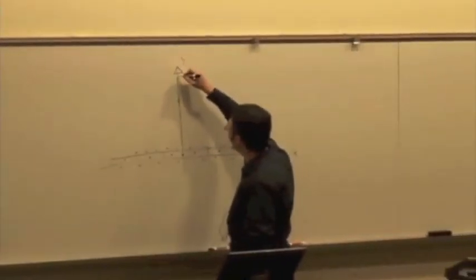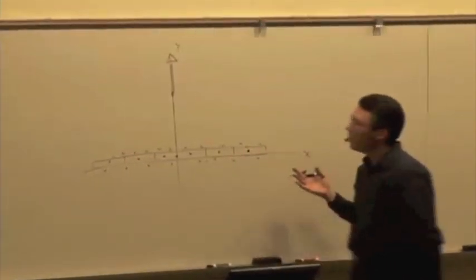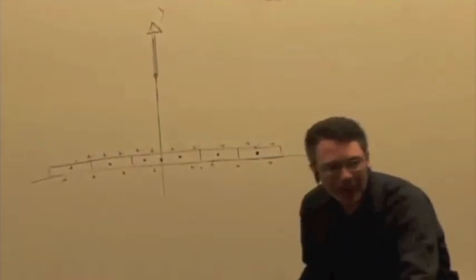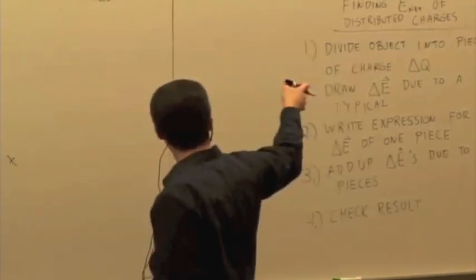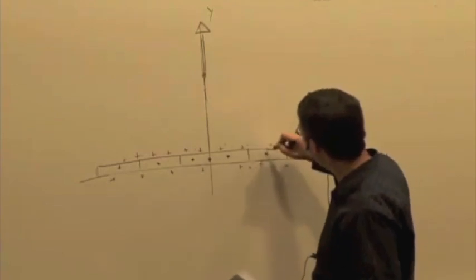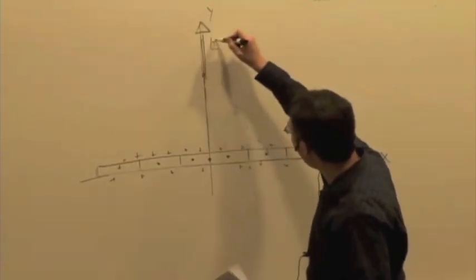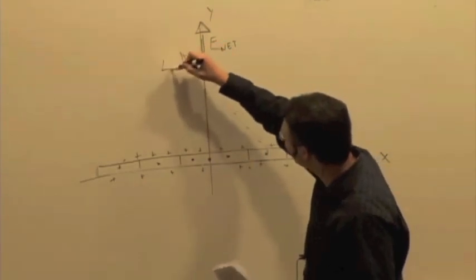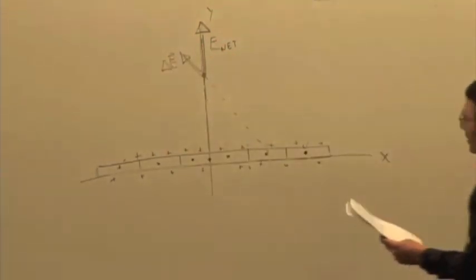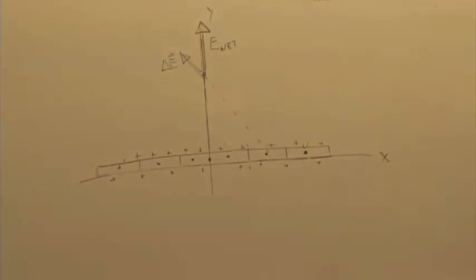So we already know what direction our result should be. That's sort of an internal check on what our result should be. So let's see if we can figure out a symbolic expression that predicts what the magnitude of the electric field is at that location. We're going through the same procedure again — we divided it up into pieces, we draw the delta E of one piece, which we know. And then we want to write the delta E in terms of our symbolic expression.